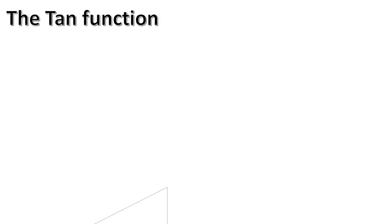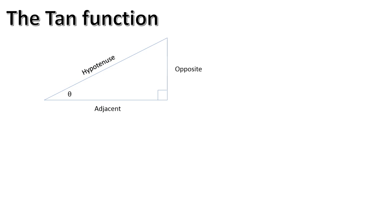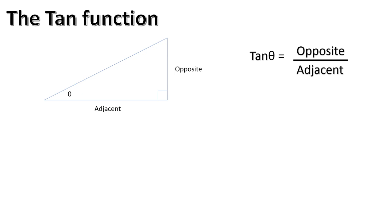The tangent function — really, really simple. Here we have a right angle triangle with angle theta, the opposite, the adjacent, and the hypotenuse. With regards to the tangent function, we're not interested in the hypotenuse — we don't need it, so we're going to get rid of that. It is defined that the tangent of the angle theta is given by the length of the opposite side divided by the length of the adjacent. It doesn't matter what the units are — miles, meters, millimeters, light years — it's just a simple ratio of opposite to adjacent.